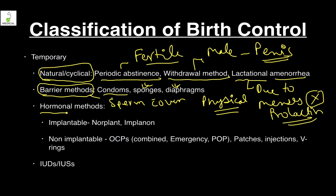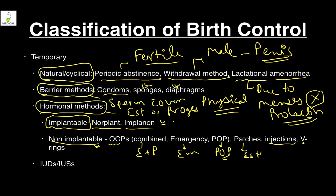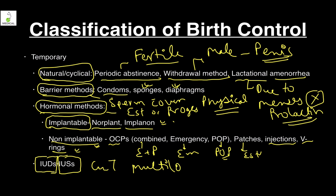Hormonal methods include hormones — either estrogen, progesterone, or both — in the form of implantable devices like Norplant or Implanon, or non-implantable forms such as oral combined pills, emergency pills, progesterone-only pills, patches, injections, and vaginal rings. Finally, intrauterine devices or intrauterine systems — such as copper T or Multiload 375 — will be covered in the next tutorial.